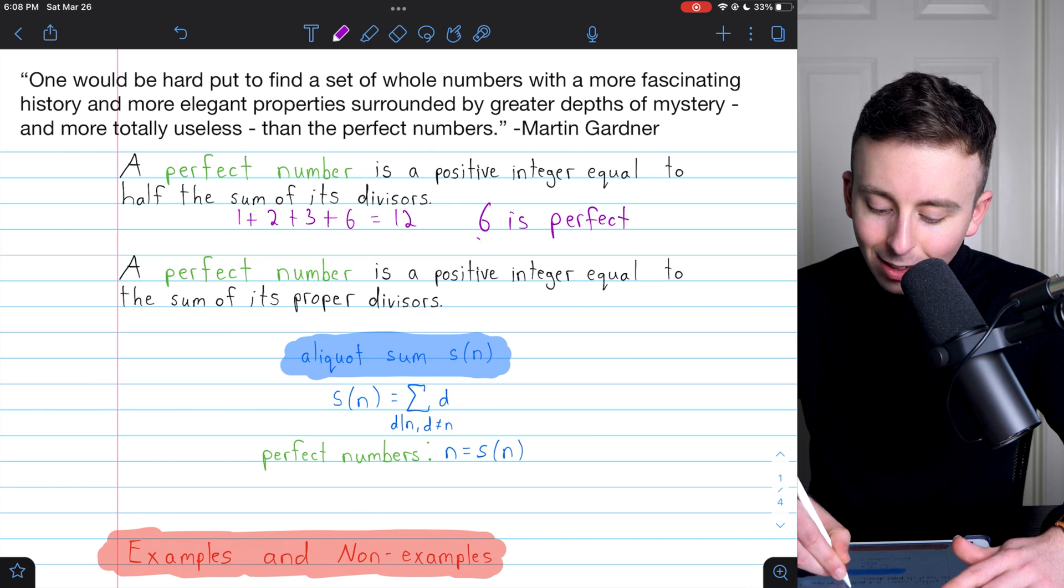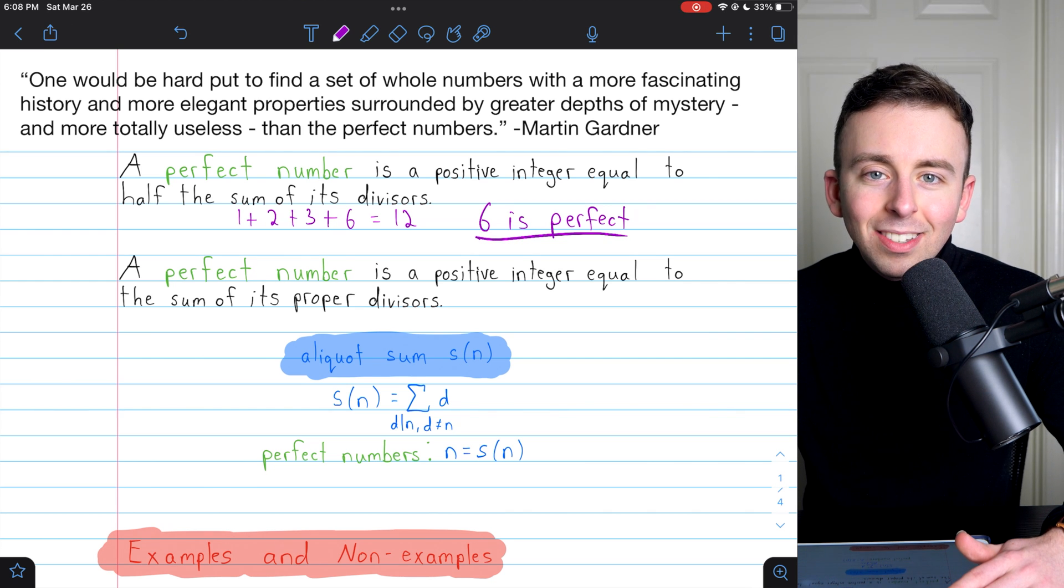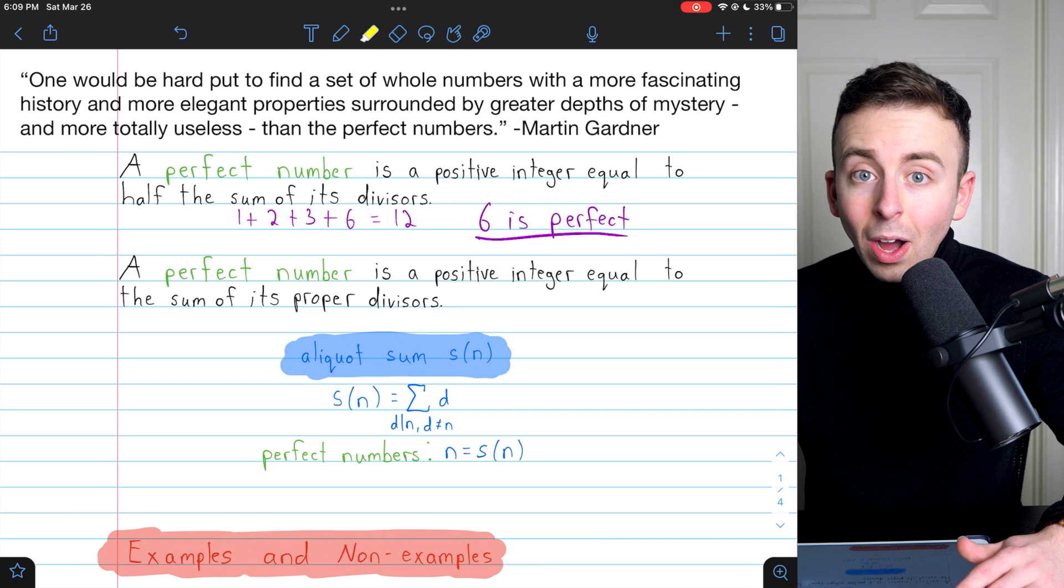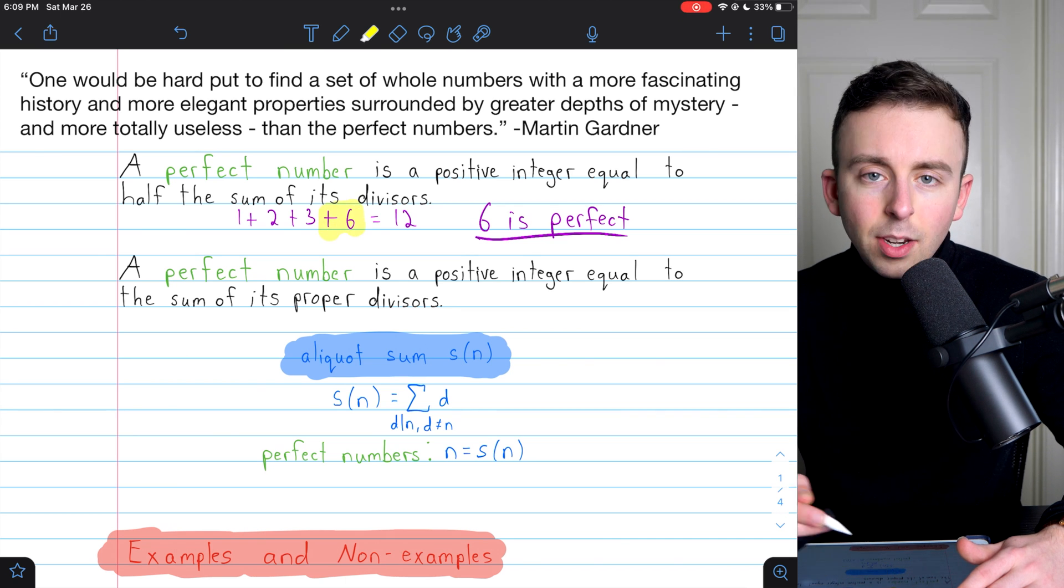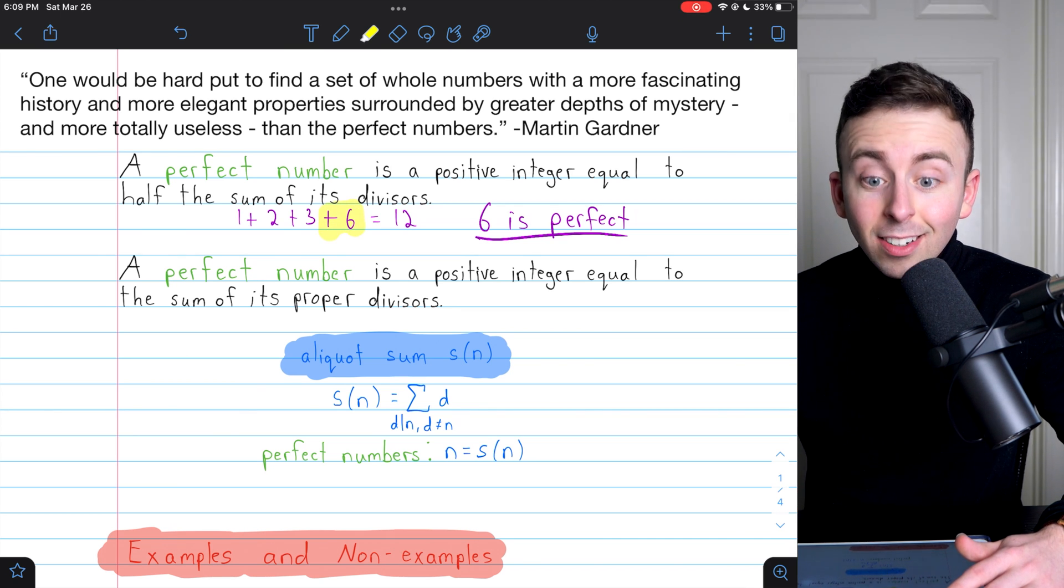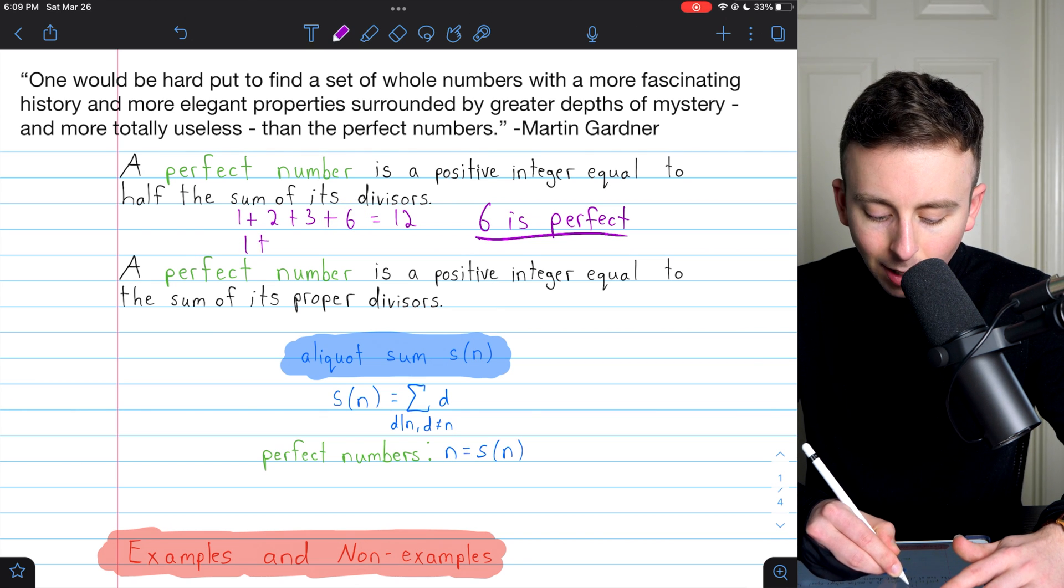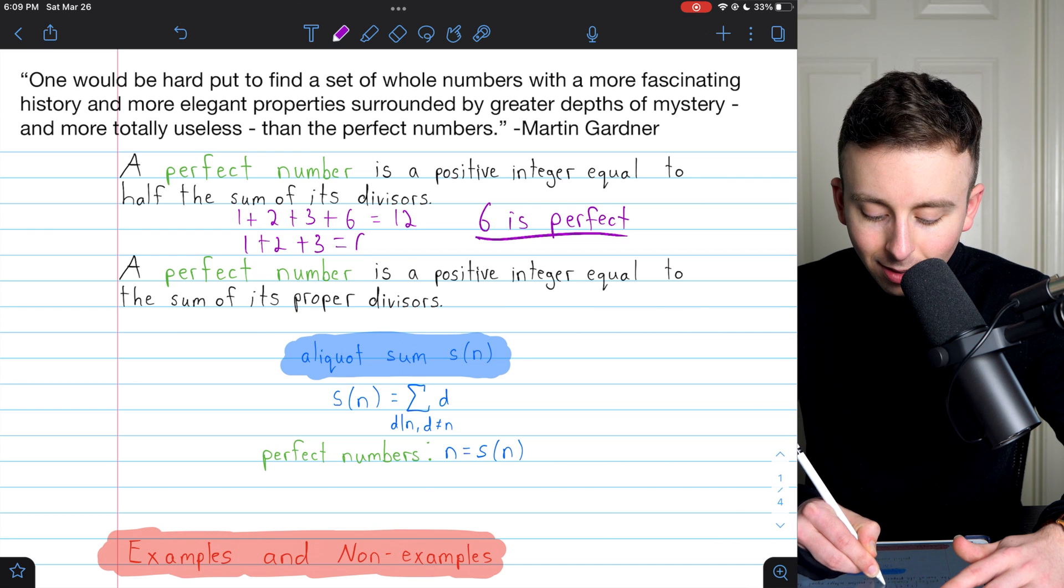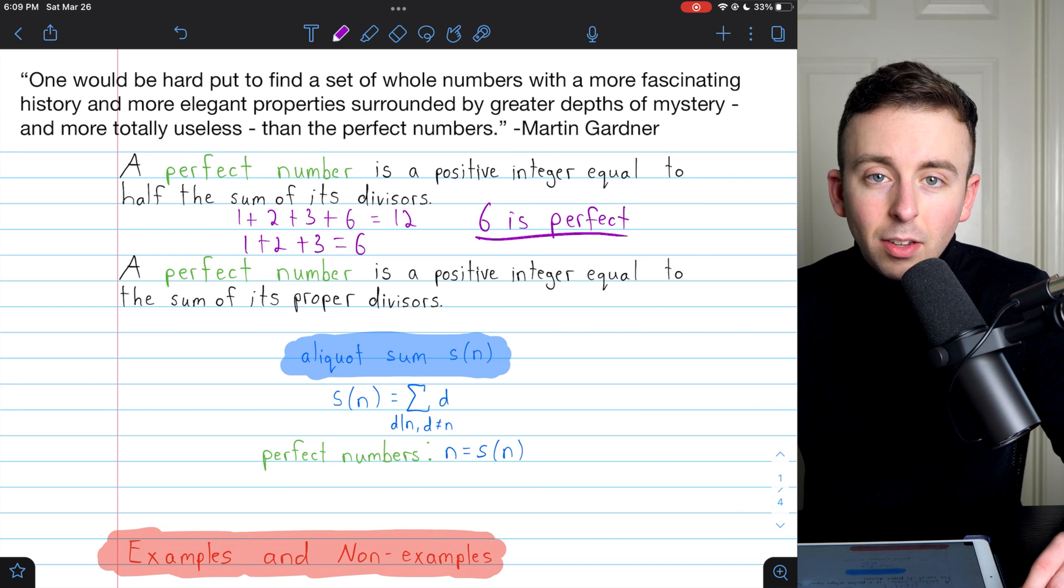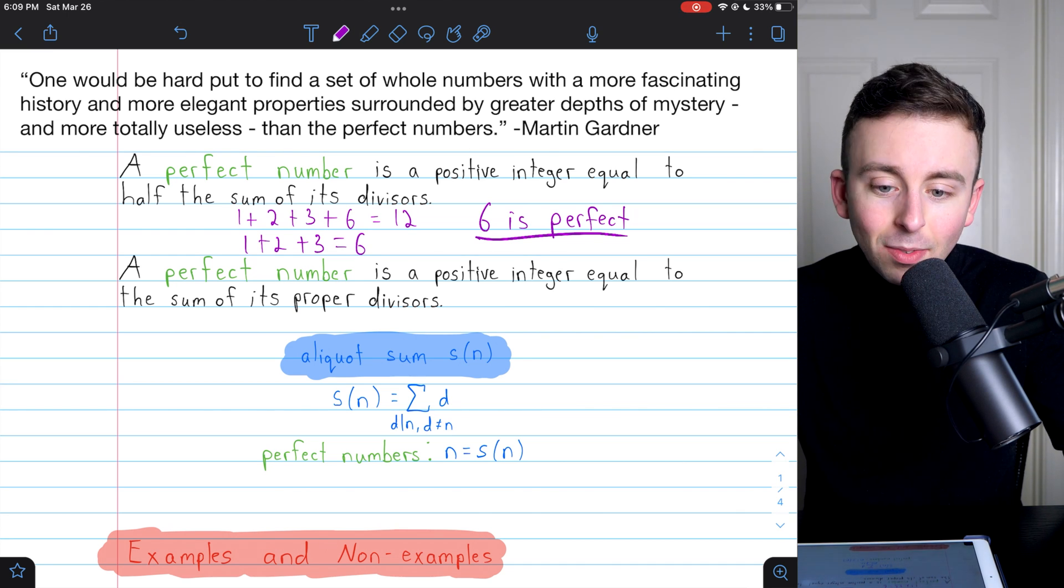6 is perfect. So take that, all you 6 haters out there. You might look at this and think, why bother including 6 with the divisors? Because if we had excluded 6, then we would have had just 1 plus 2 plus 3, which gives us 6 exactly, instead of giving us 12, which is 2 times 6.